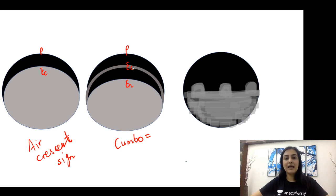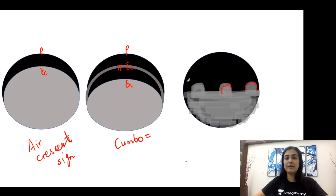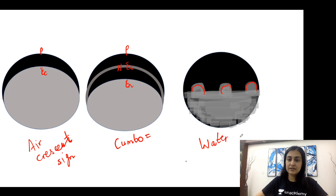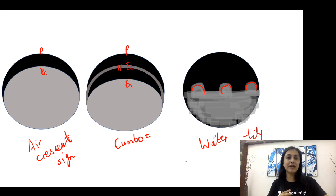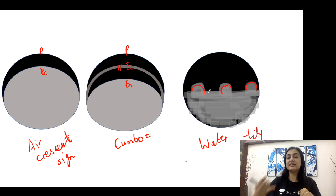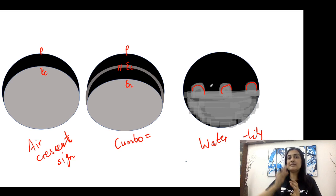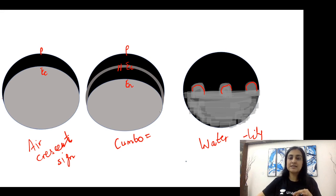When air ruptures further into the cyst, an air-fluid level forms, and daughter cysts or membranes float on the fluid surface — this is the water lily sign. Just as a water lily grows on the surface of water, these floating membranes project from the air-fluid level. The water lily sign is seen in both liver and lung hydatid.